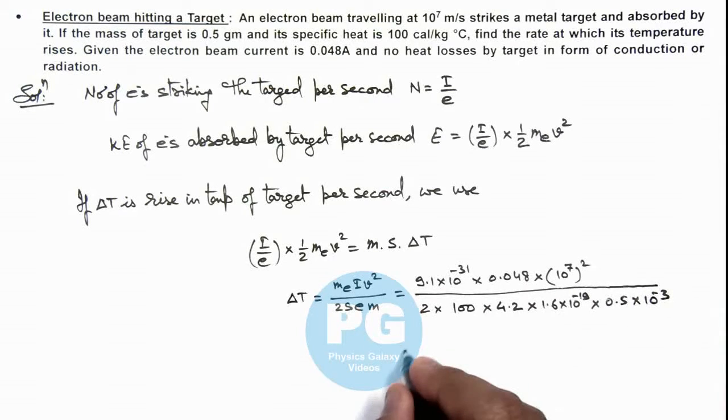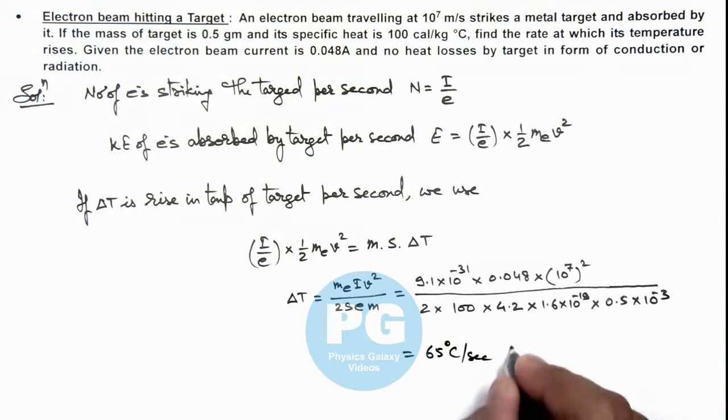So if you numerically simplify this value it gives us 65 degree centigrade per second. That is the result of the problem, the rise in temperature per second of the target due to hitting of this electron beam.